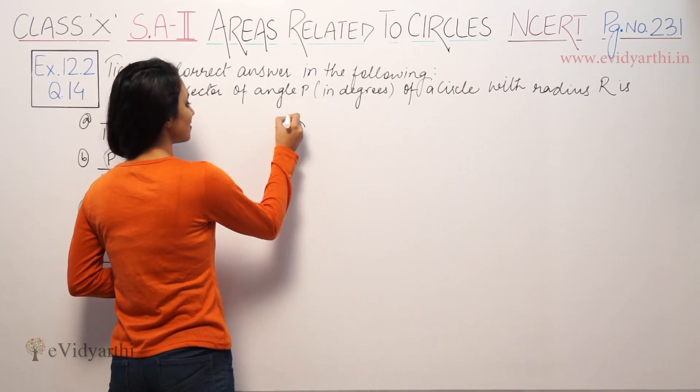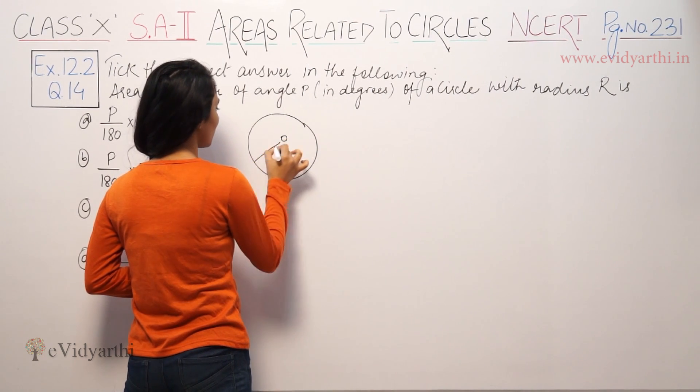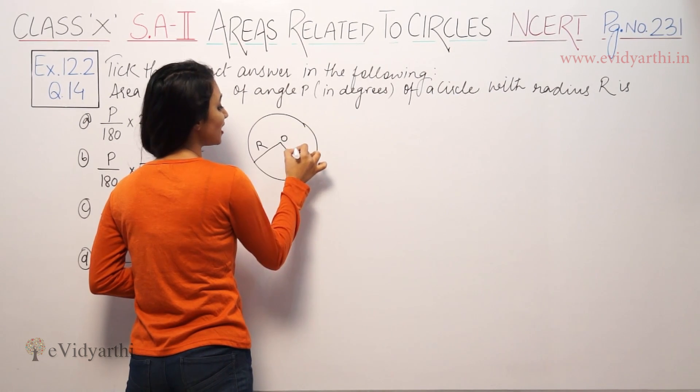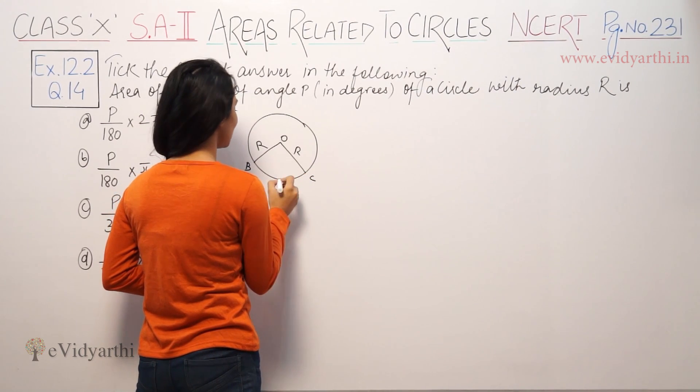So we have given a circle. Center let's suppose is O. Radius we have given capital R. We have no notation change because it is given capital. This is B and this is C. Let's suppose this is D.